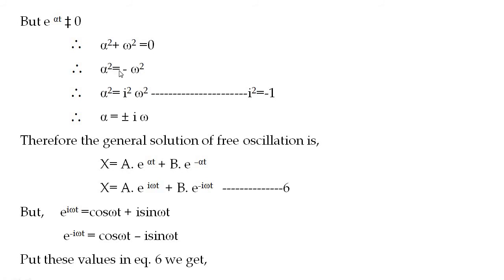Since i² = −1, we write α² = i²ω², giving α = ±iω. The general solution is x = Ae^(αt) + Be^(−αt). Substituting α = iω: x = Ae^(iωt) + Be^(−iωt) (equation 6).